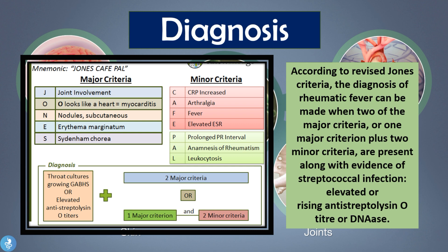When diagnosing a patient with rheumatic fever, we look for specific criteria using the mnemonic JONES. J is for joint involvement — arthritis. O represents the heart — myocarditis or inflammation of the heart. N is for nodules — the subcutaneous nodules. E is for erythema marginatum — that rash. And S stands for Sydenham's chorea — those involuntary jerky movements. For minor criteria: CRP (C-reactive protein) is elevated, a sign of inflammation; A is for arthralgia — joint pain; F is for fever; and E is for elevated ESR.